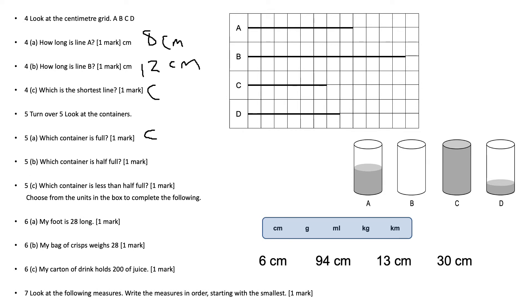Question number five, look at these containers. Which container is full? It's going to be letter C. Which container is half full? That's going to be letter A. Part C, which container is less than half full? That's going to be letter D because B is empty, so B has nothing but D has less than half.